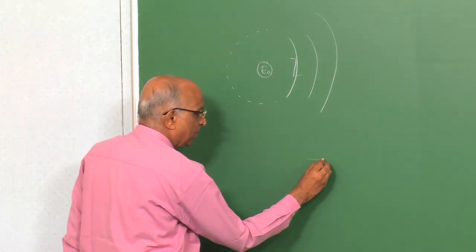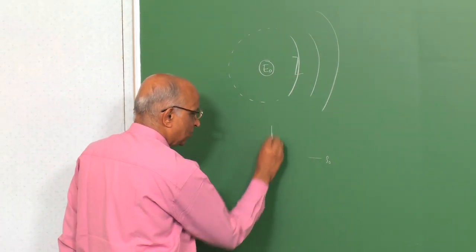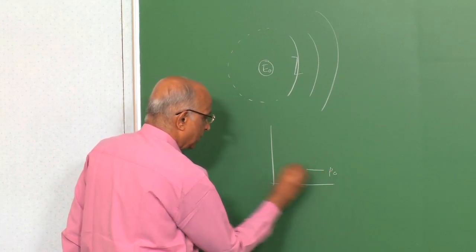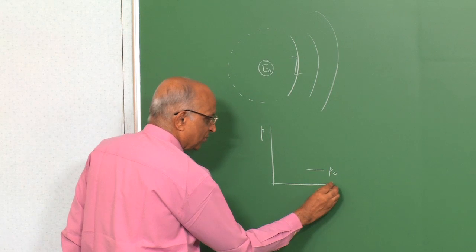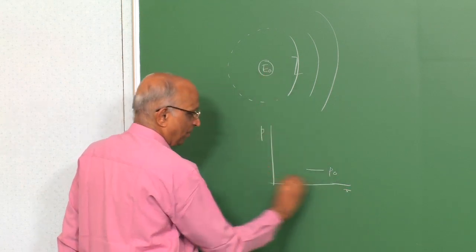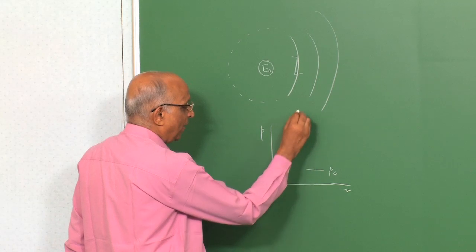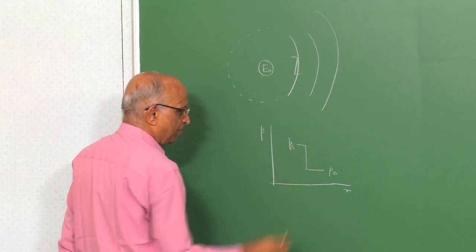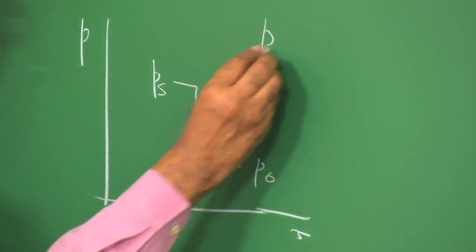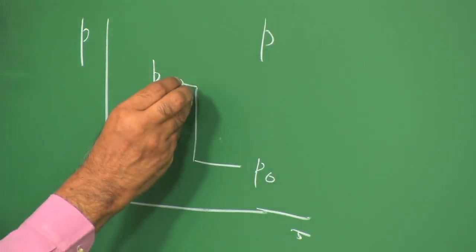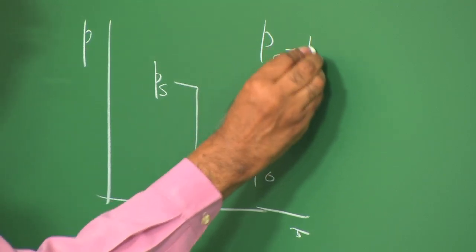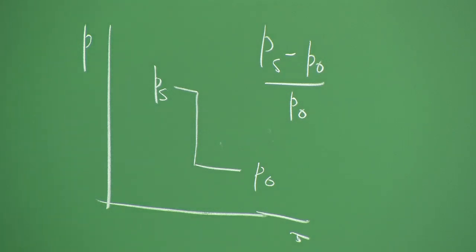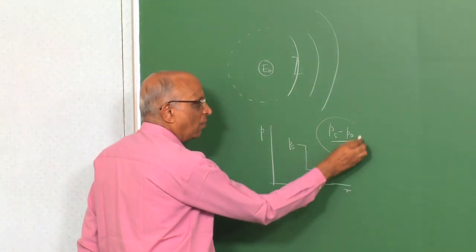We said the ambient pressure is rho_0; let us make a plot of pressure versus distance from the centre. The ambient pressure is P0, and when the blast wave arrives there is a rise in pressure PS. The overpressure or excess pressure behind the wave relative to ambient is PS minus P0, which we non-dimensionalize with respect to P0, and this we called the non-dimensional overpressure.